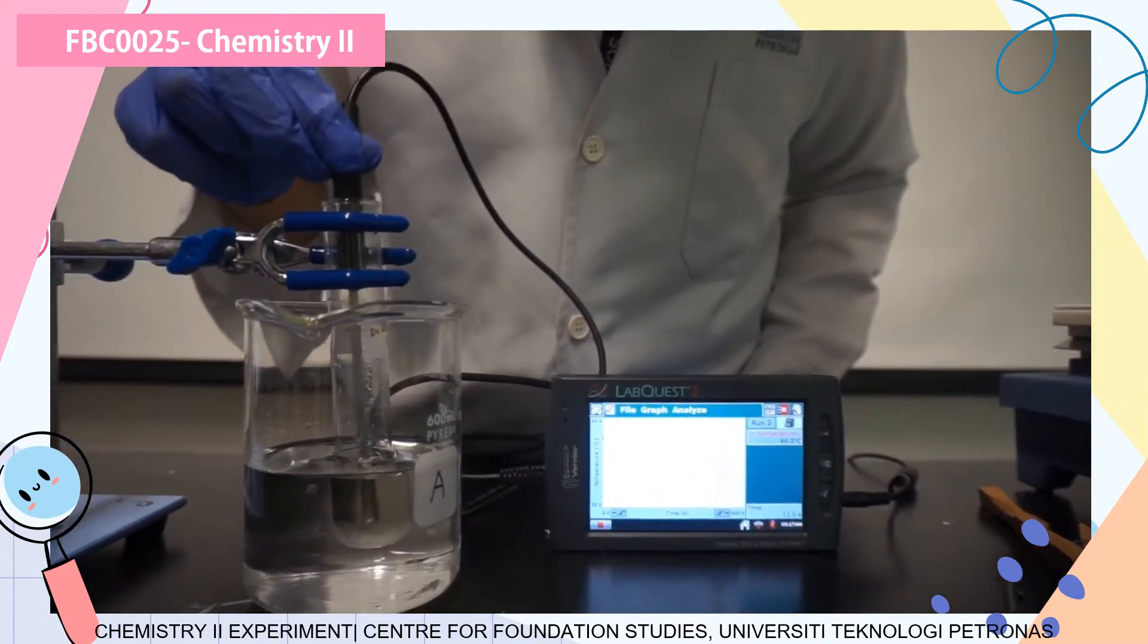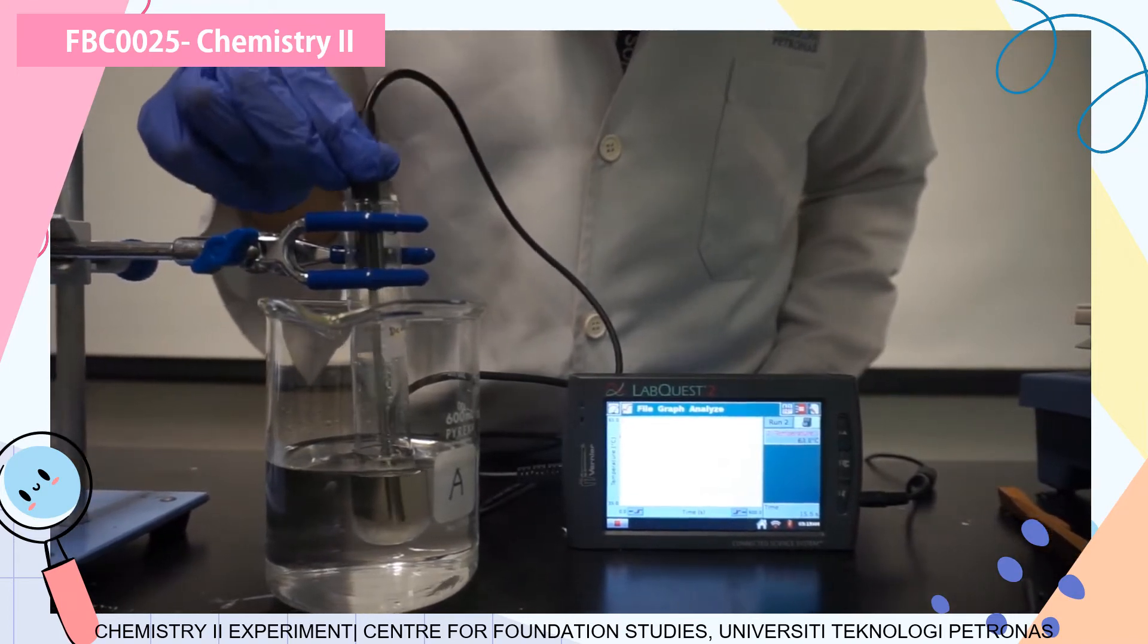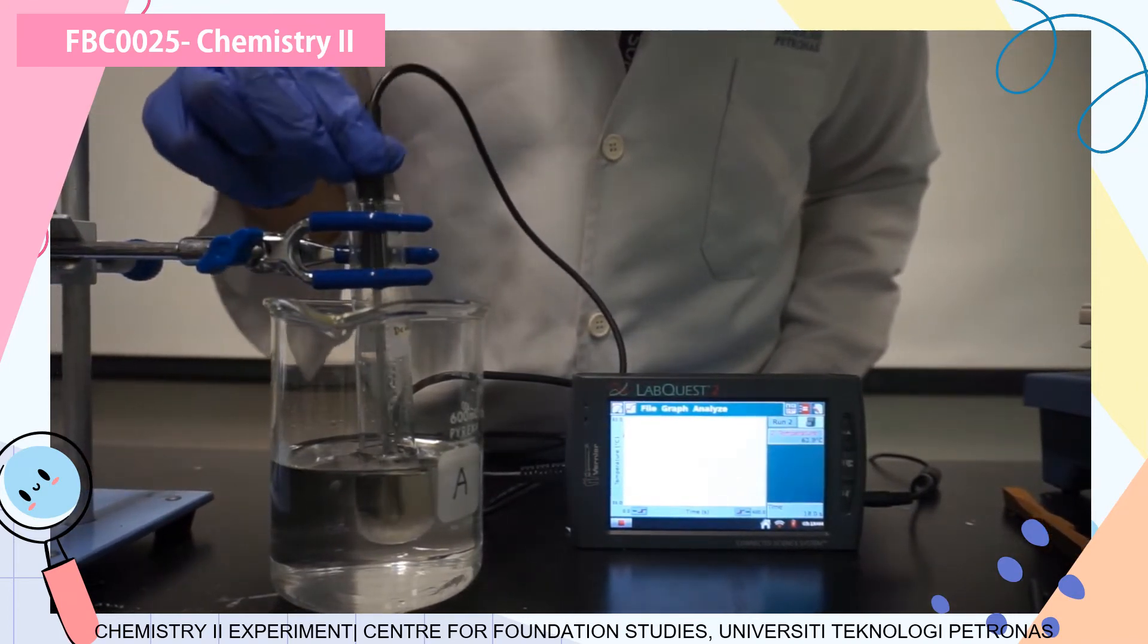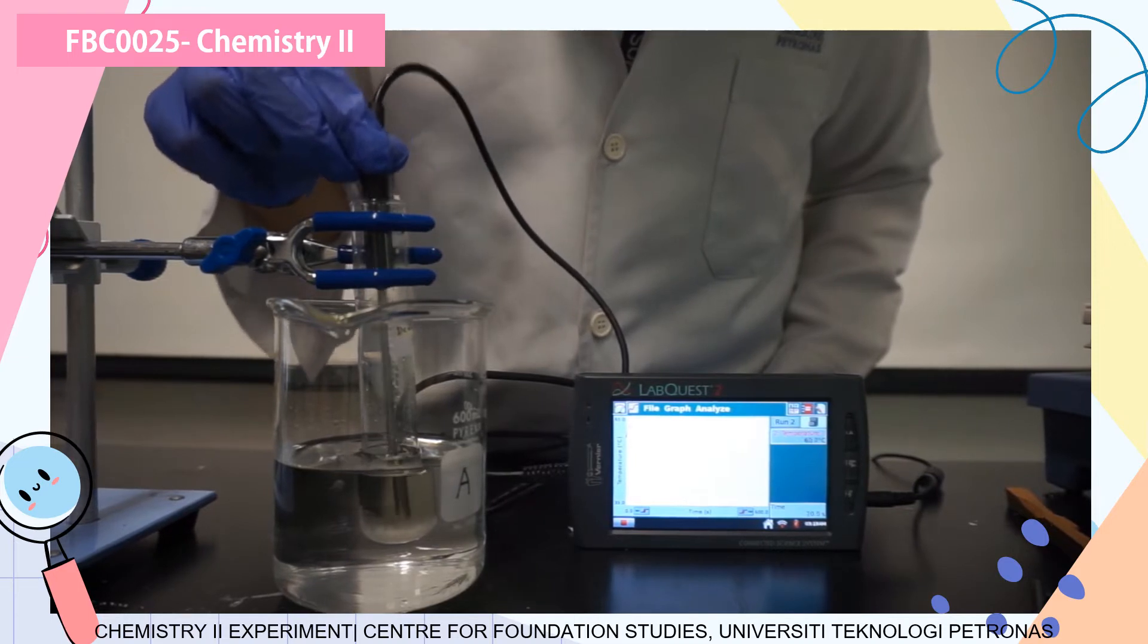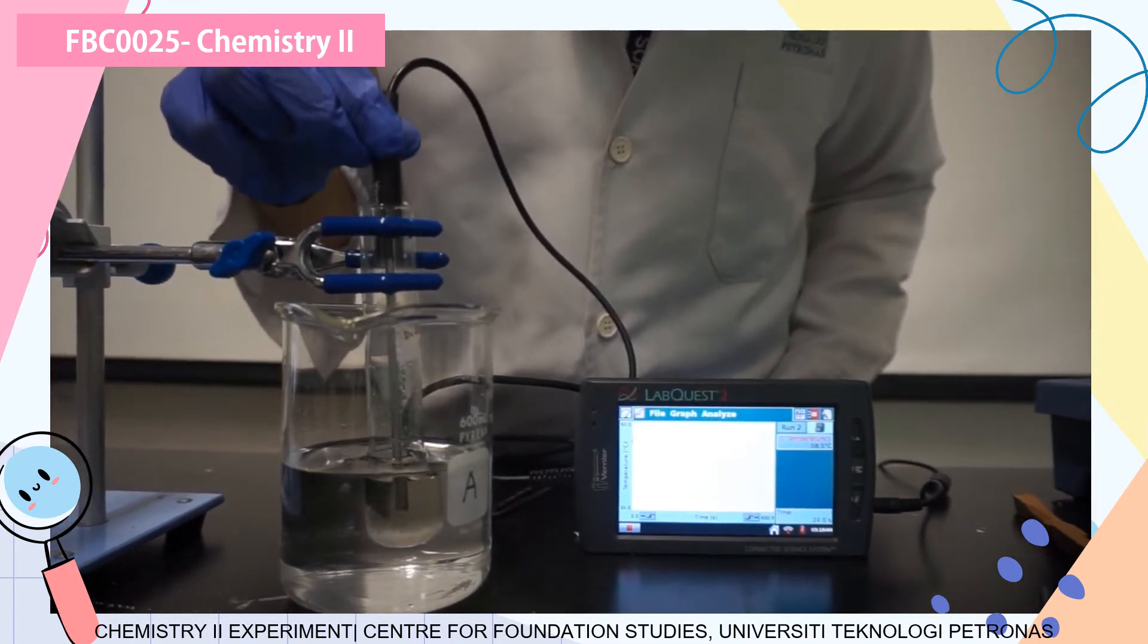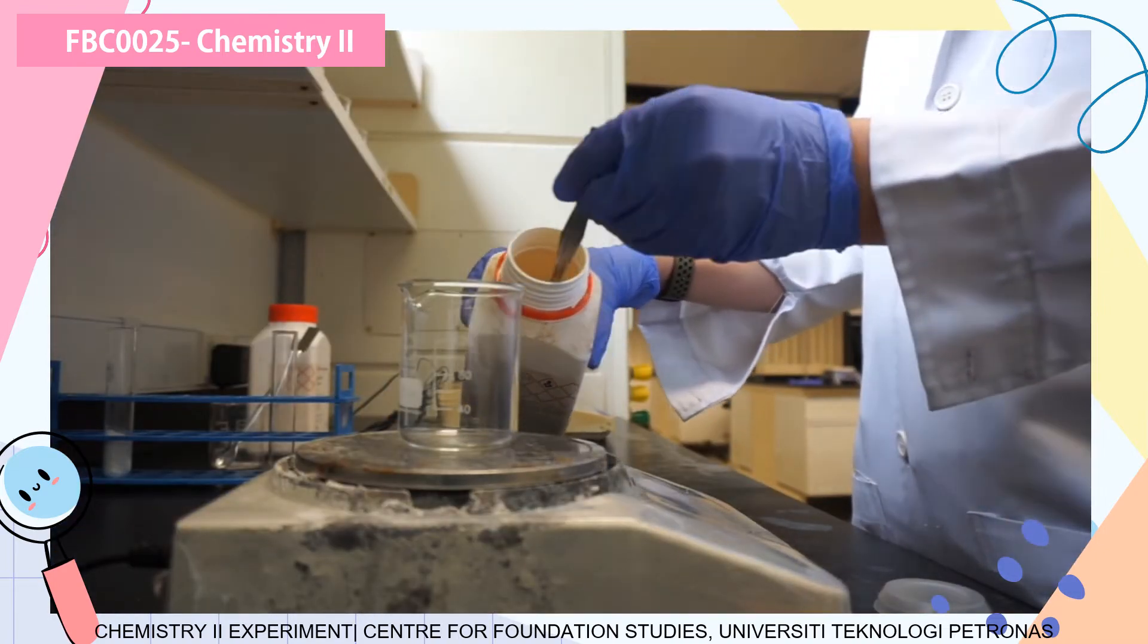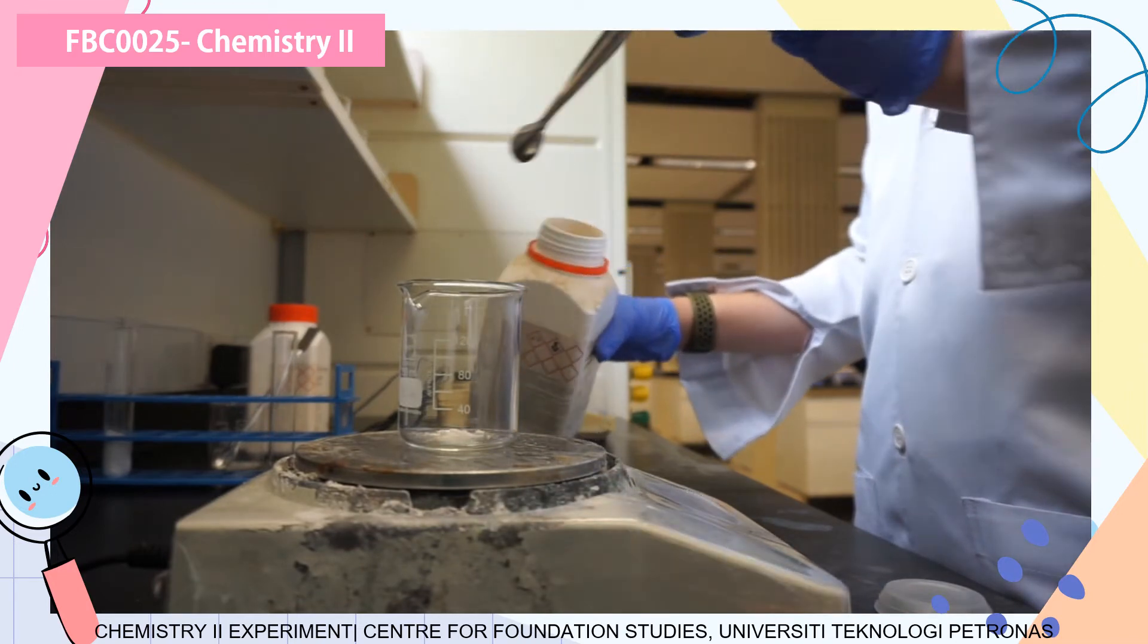When you are doing the data collection, you must stir it gently by pushing the probe up and down. But do not try to stir it like you are making some iced Milo. Be gentle in the experiment. After that, you should get the data for the determination of freezing temperature of the solvent or the lauric acid.